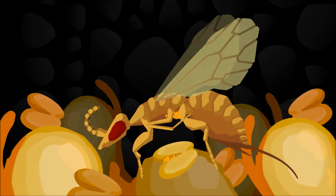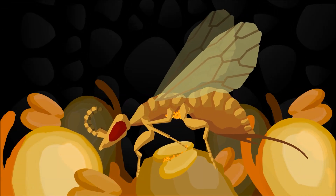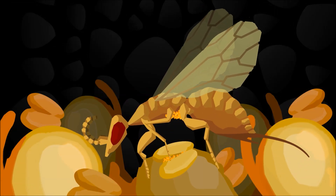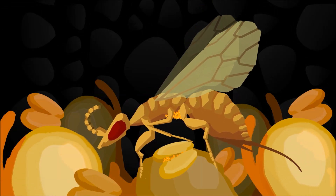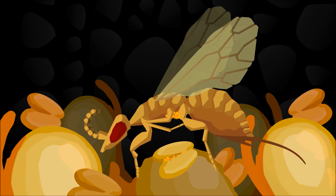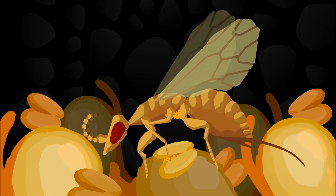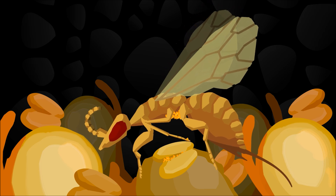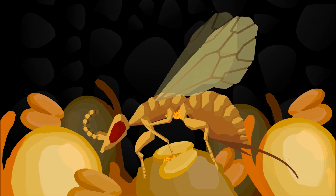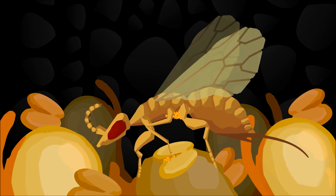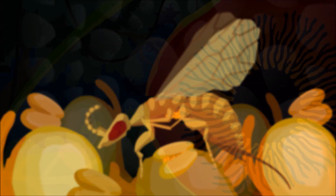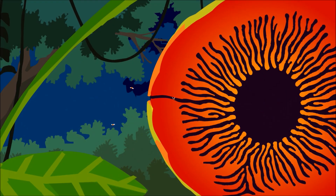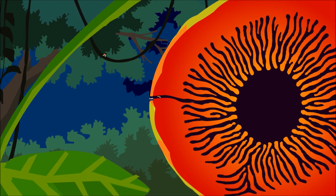They don't have much time, for the fruit ripens as soon as the galls are empty. Male wasps cut stamens and offer the pollen to the females, which they take as a parting gift. Finally, the males proceed to dig a tunnel to set the females free.